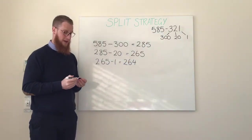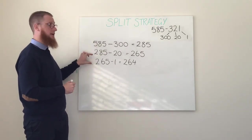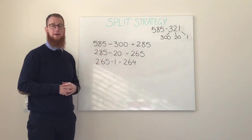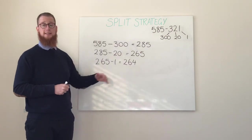We have now taken away our three lots of 100, our two lots of 10, and our one lot of one. And so therefore we have solved our equation of 585 minus 321. We have our answer: 264.